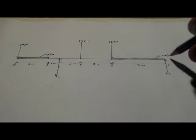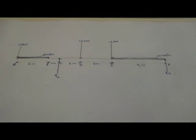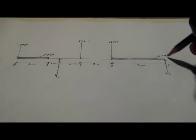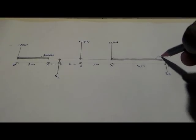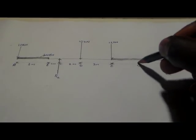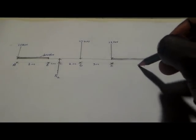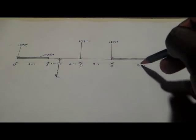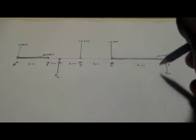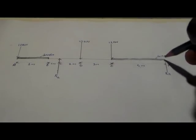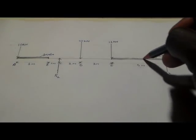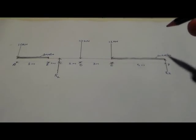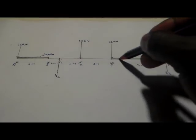We need to resolve the distributed loads into point loads. To do that, we multiply the distributed load force by the distance of its distribution. For example, if it's 4 kilonewtons per meter, that means 1 meter of this load weighs 4 kilonewtons.